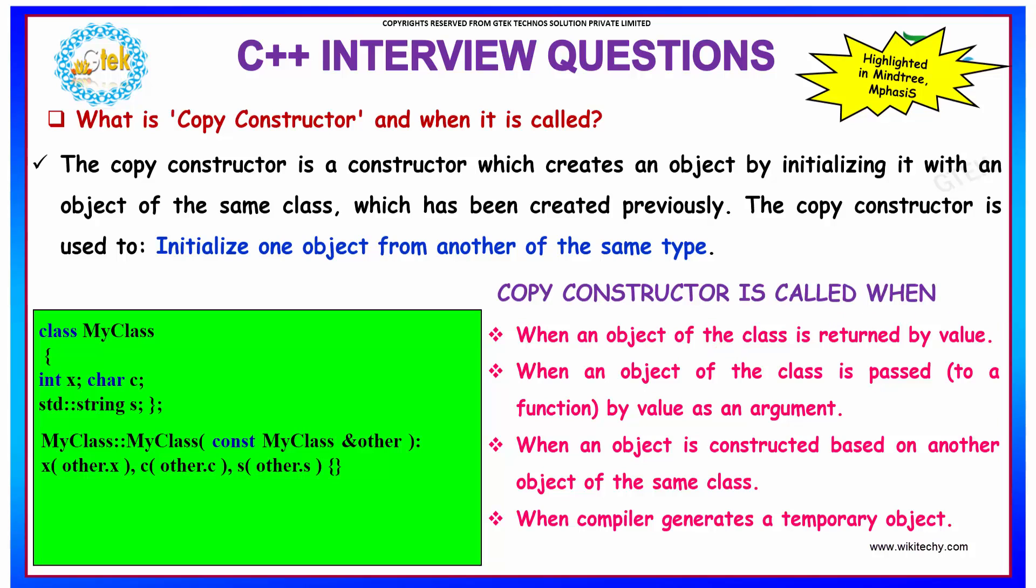And when a copy constructor will be called, it will be called in the following situations: when an object of the class is returned by the value, when the object of a class is passed by value as an argument, when an object is constructed based on another object of the same class, when compiler generates a temporary object. In these cases, you will be having a copy constructor.